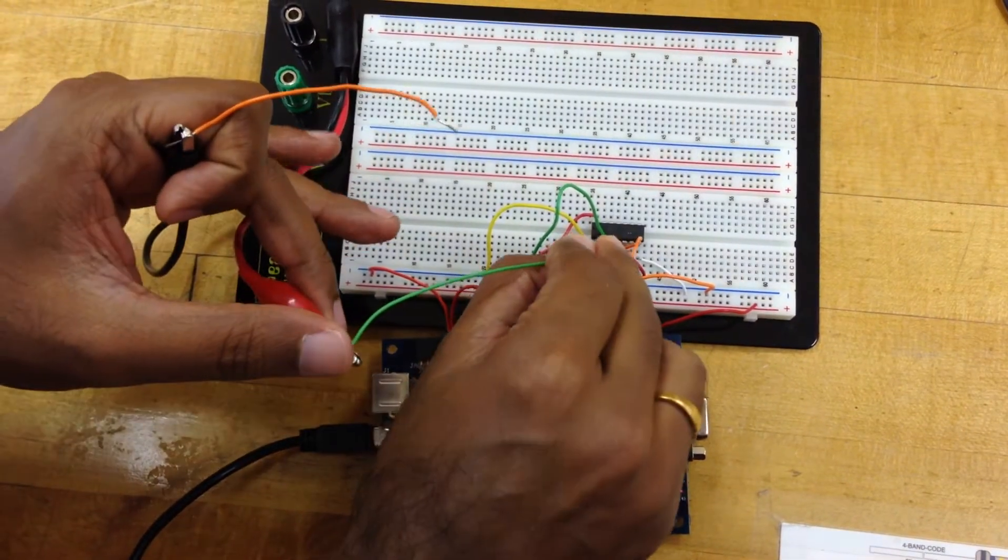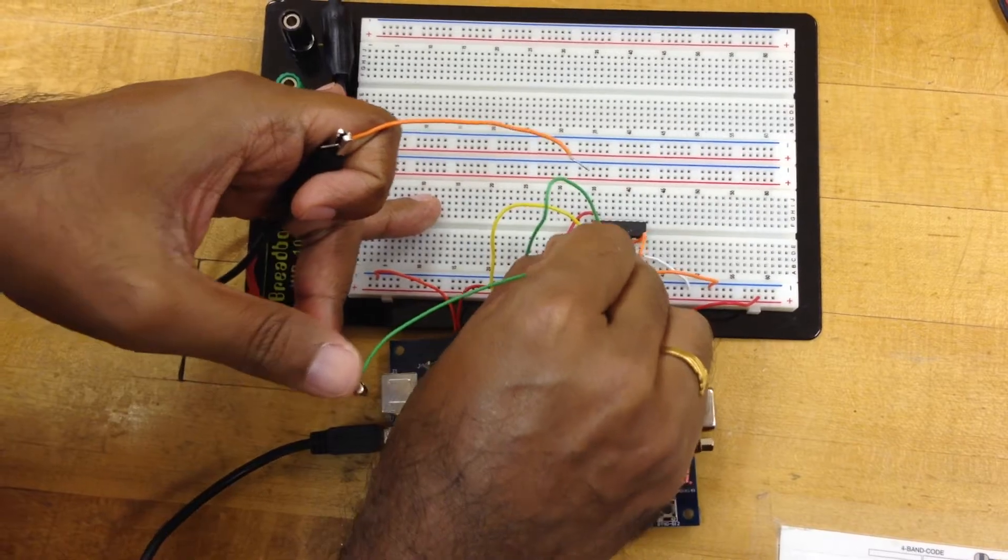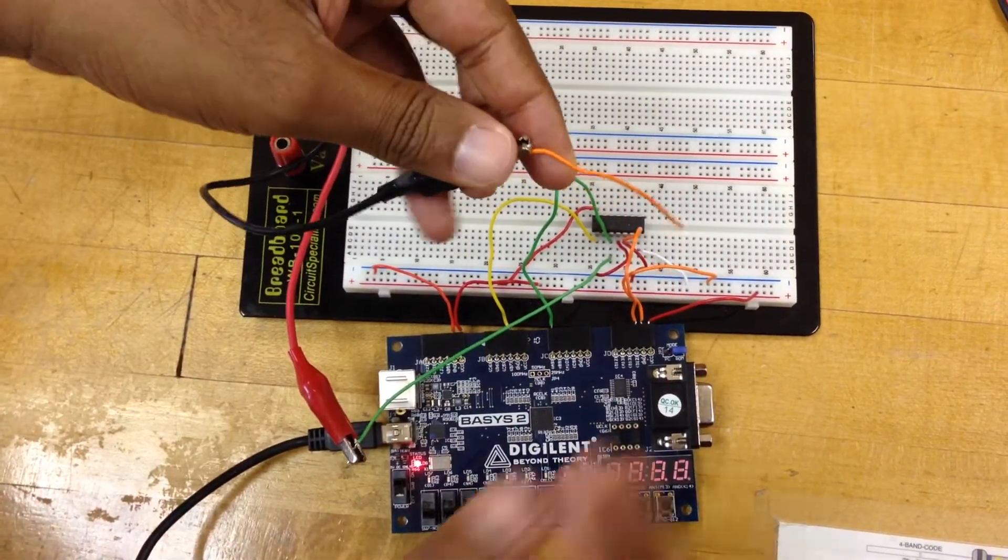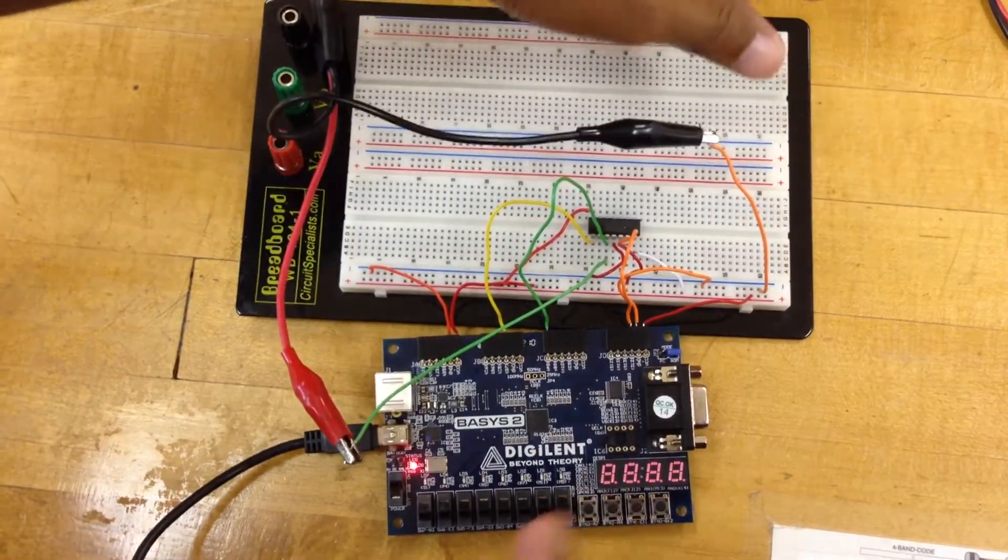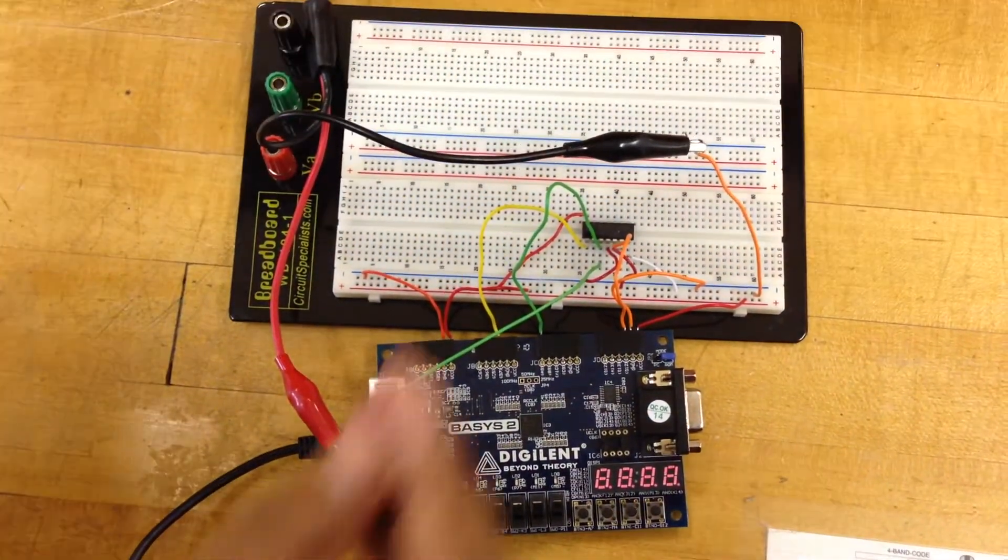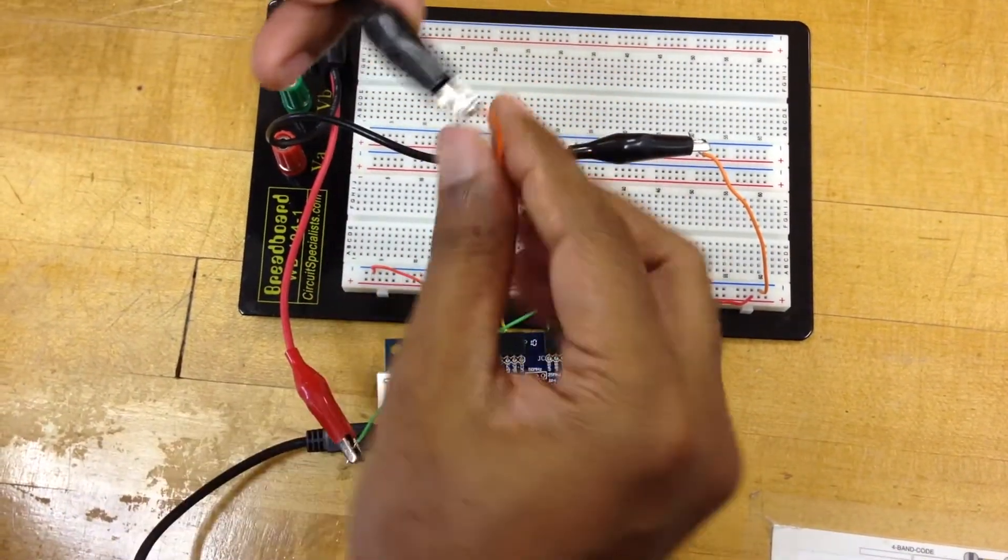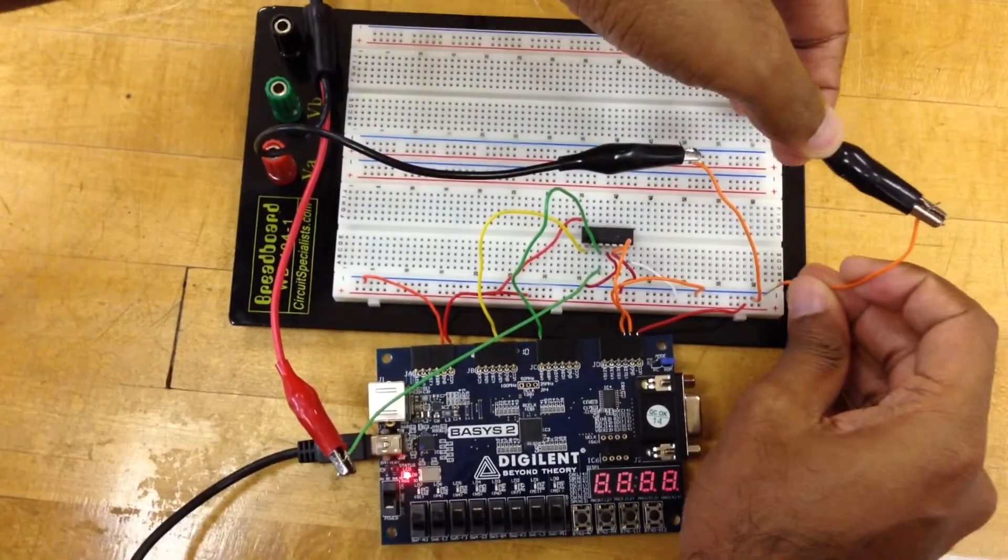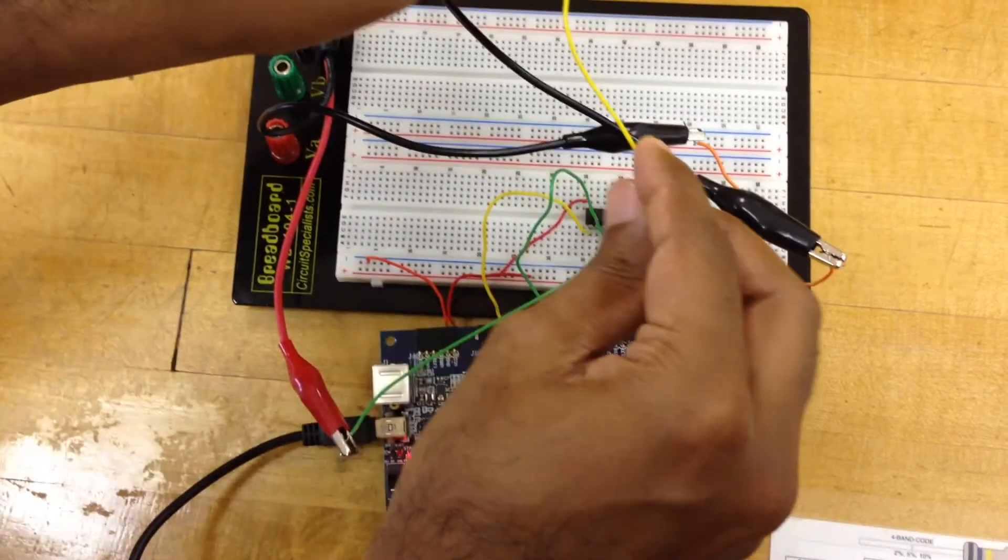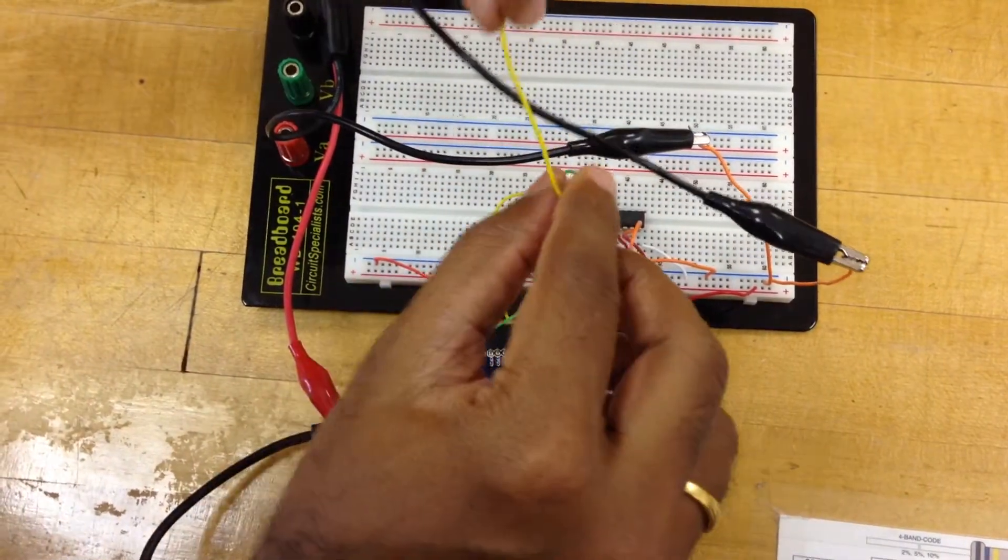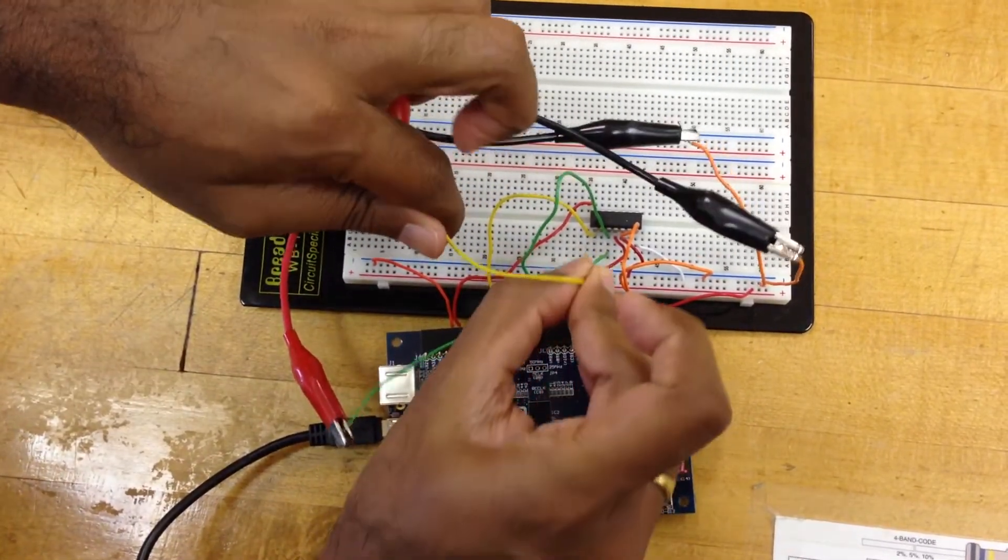I'll take another probe. The black I'll connect to the ground and the red I'm going to connect to the output of the D flip-flop, which is Q. We can do that by connecting this to the first pin of 4013, which is Q.